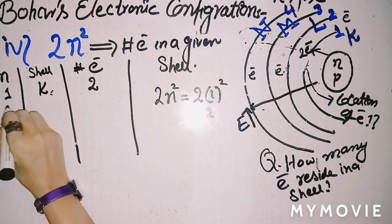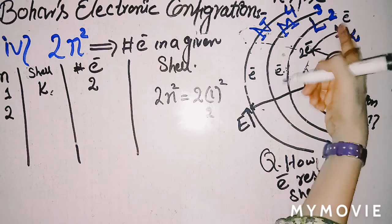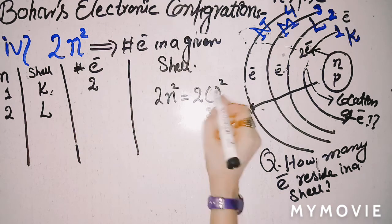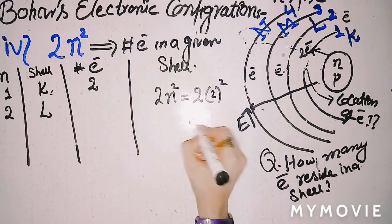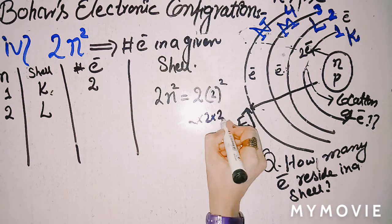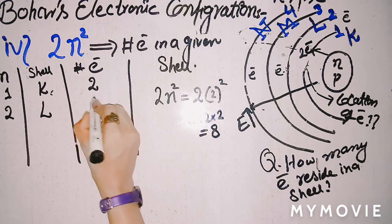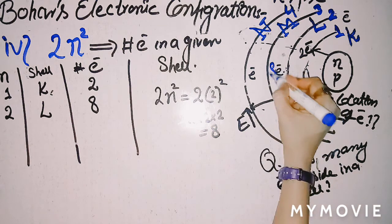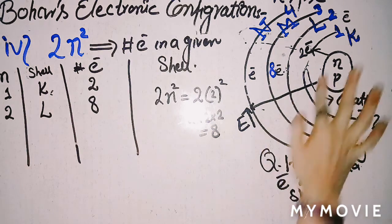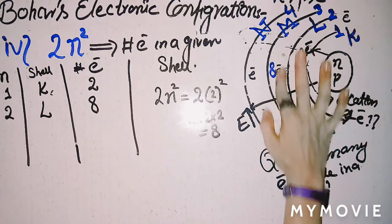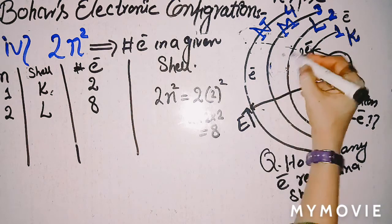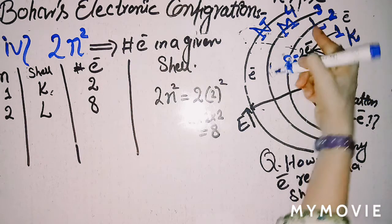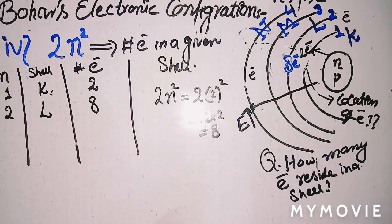If n=2, the shell is L, and the number of electrons is 2 multiplied by 2² = 2 × 4 = 8. So the L-shell contains a maximum of 8 electrons. You can write that the L-shell accommodates 8 electrons.